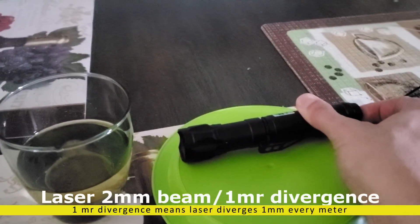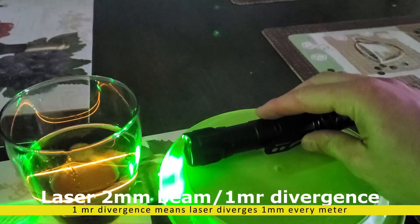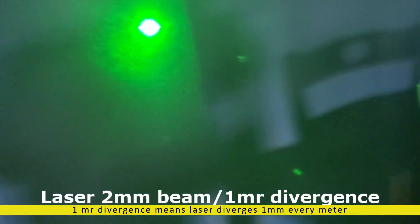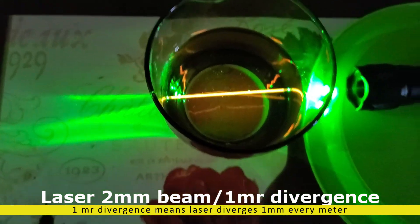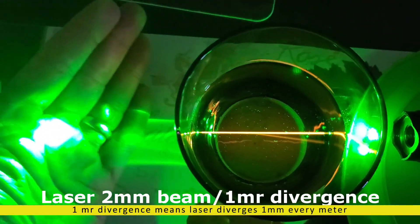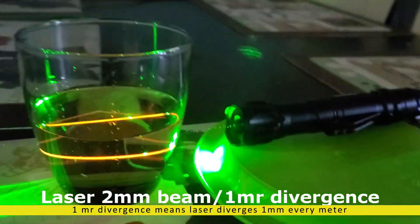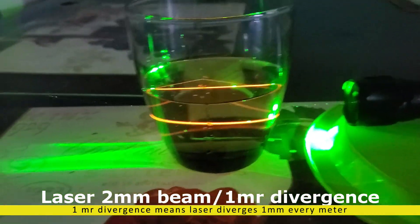Just to let you know, all lasers diverge. Here's an experiment right here up close with the laser shining through some canola oil in the glass. As you can see, the laser beam is two millimeters with a one milliradian divergence. That means the laser diverges one millimeter every meter the laser travels outward.